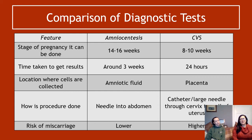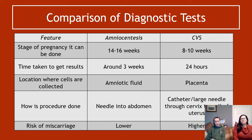How the procedure is done — you can't be examined on this, but you might see it in a picture and have to recognise it. For amniocentesis it's a needle into the abdomen; for CVS it's a catheter or large needle through the cervix, going in through the vagina and aiming for the placenta. The final and key difference is risk of miscarriage — in amniocentesis it is much, much lower than in CVS.